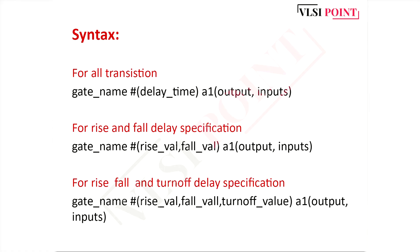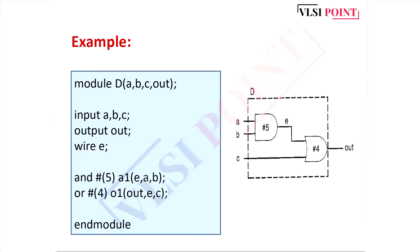I hope this syntax is clear. You can understand this through this example. An and gate has a 5 time unit delay and an or gate has a 4 time unit delay. In the Verilog code: and #5 instance_name output, inputs; and for or gate: or #4 instance_name output, inputs. In this manner you can insert the delay value while writing Verilog code.